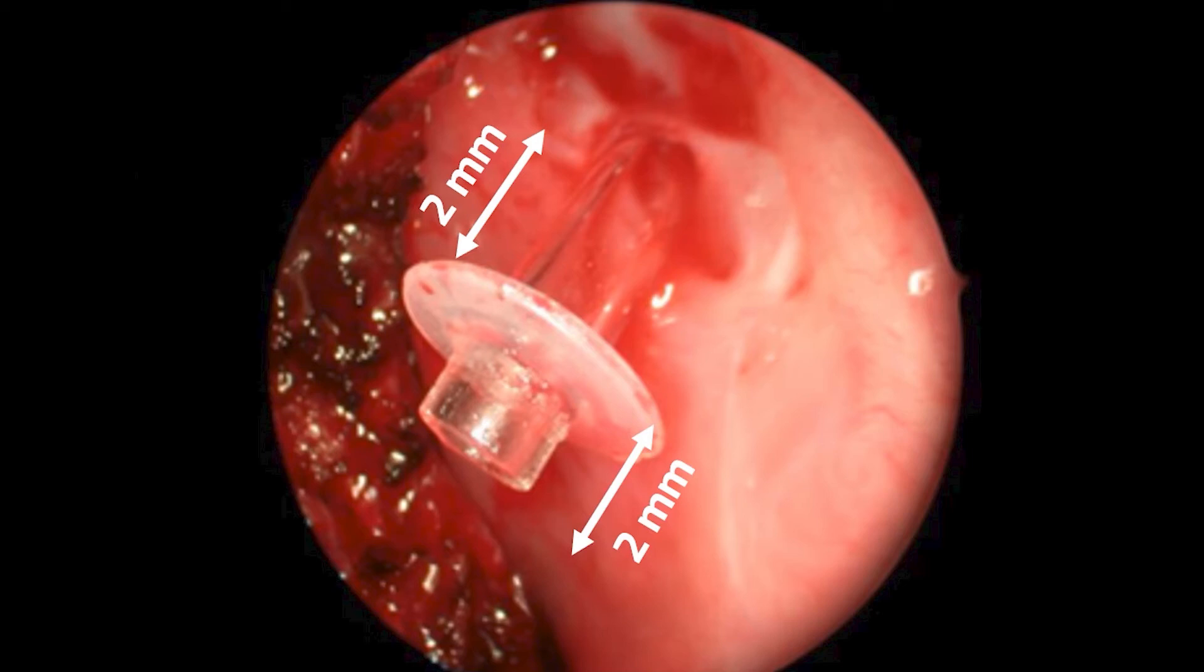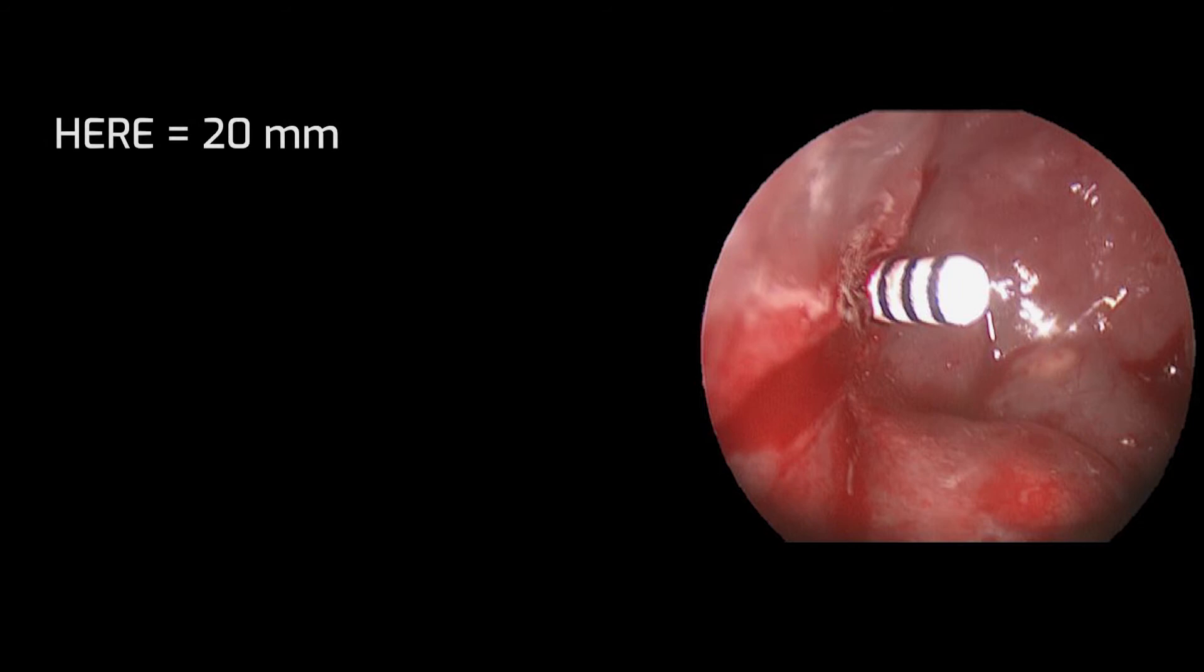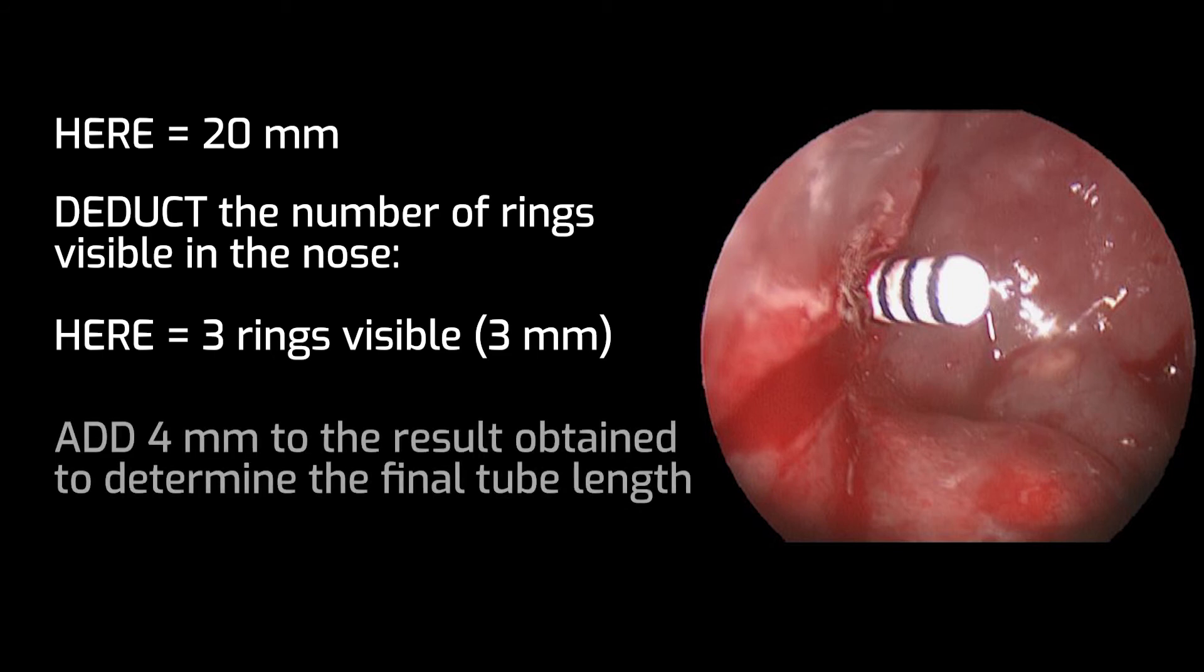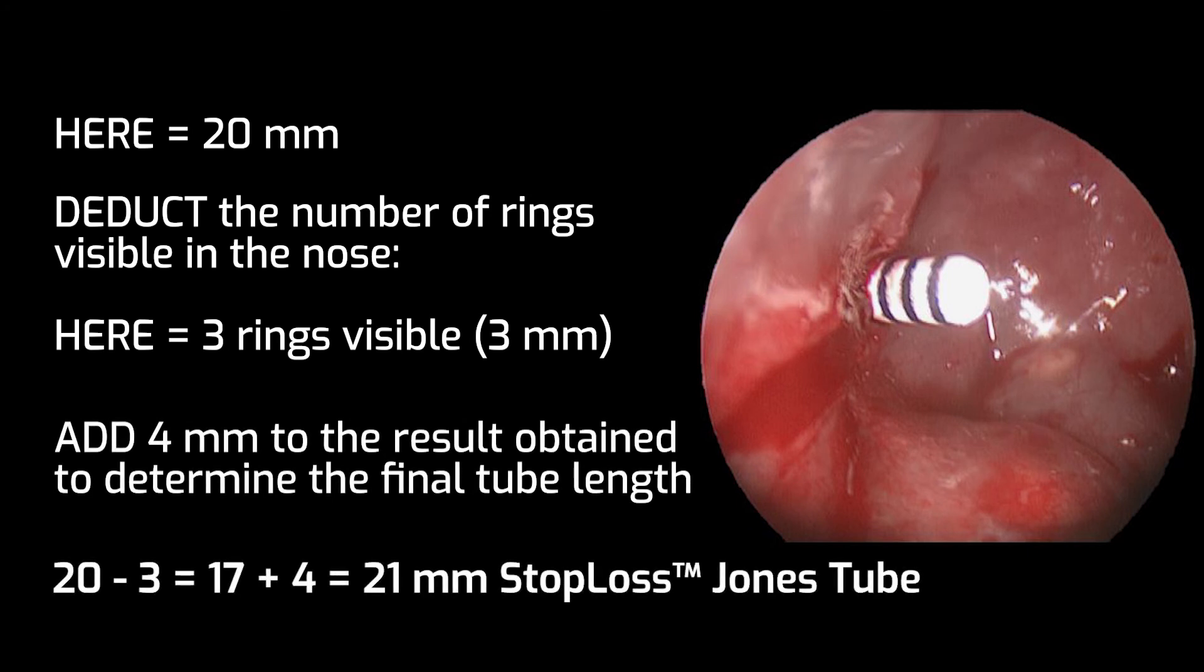For example, assume we used the 20 millimeter length dummy tube and we can see three rings visible in the nose. Subtract the three rings from 20, the length of the tube, and add back four. 20 minus three equals 17, plus four equals 21. The patient will require a 21 millimeter stop-loss Jones tube.